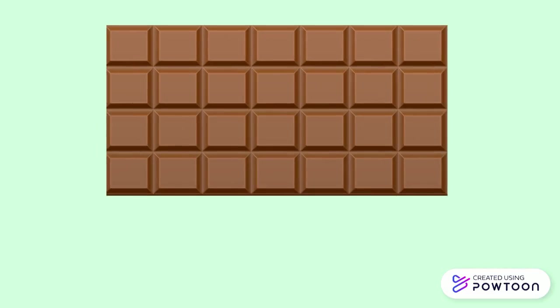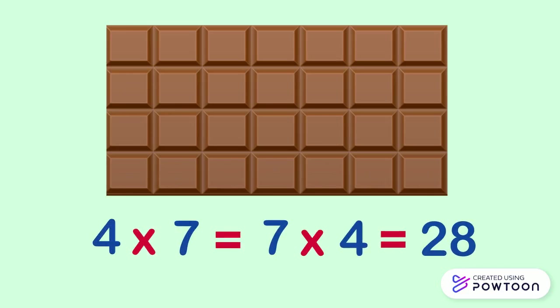We can calculate quickly the number of pieces of chocolate by using array. In the first column we have 4 pieces, in the last row we have 7 pieces. So it is 4 times 7 or 7 times 4, which equals 28. So there are 28 pieces of chocolate.